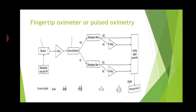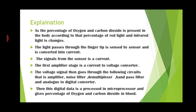Now we will see fingertip oximetry or pulse oximetry. According to the percentage of oxygen and carbon dioxide present in the body, the percentage of red light and infrared light changes. The light passing through the fingertip is sensed by a sensor and converted into current. The first amplifier stage is a current-to-voltage converter. The voltage signal then goes through an amplifier, noise filter, demultiplexer, bandpass filter, and analog-to-digital converter. The digital data is processed in a microprocessor and gives the percentage of oxygen and carbon dioxide in blood.